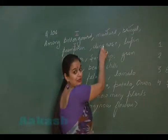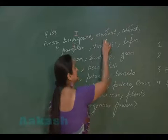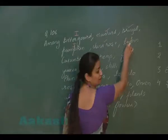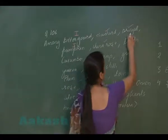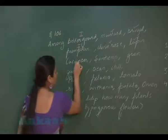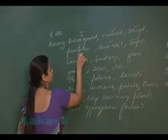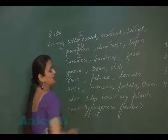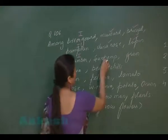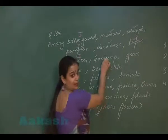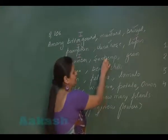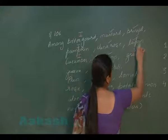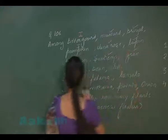China rose — Malvaceae — superior. Lupin — Fabaceae — superior. Cucumber — Cucurbitaceae — inferior. Sunn hemp — Fabaceae — superior. Gram — Fabaceae — superior.